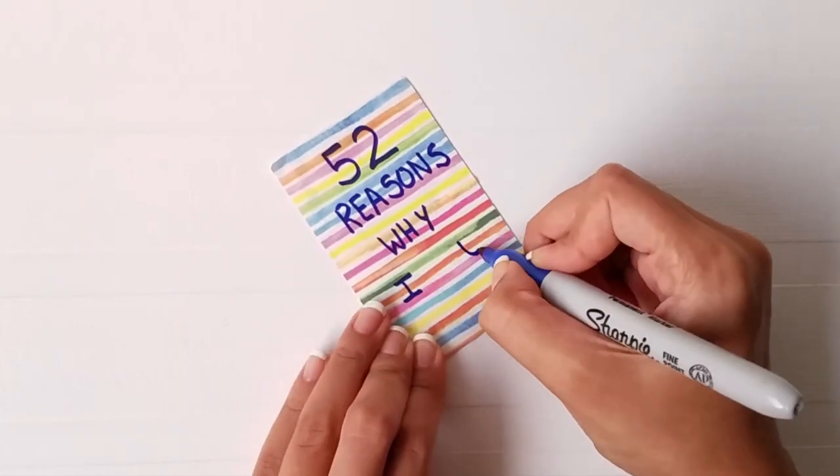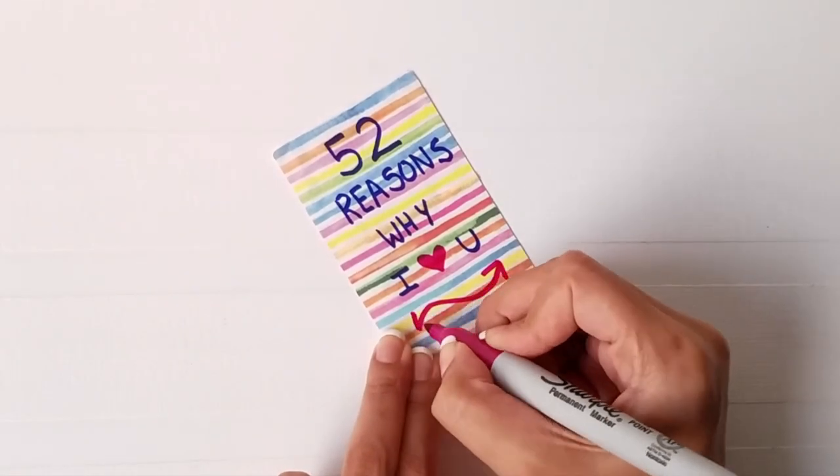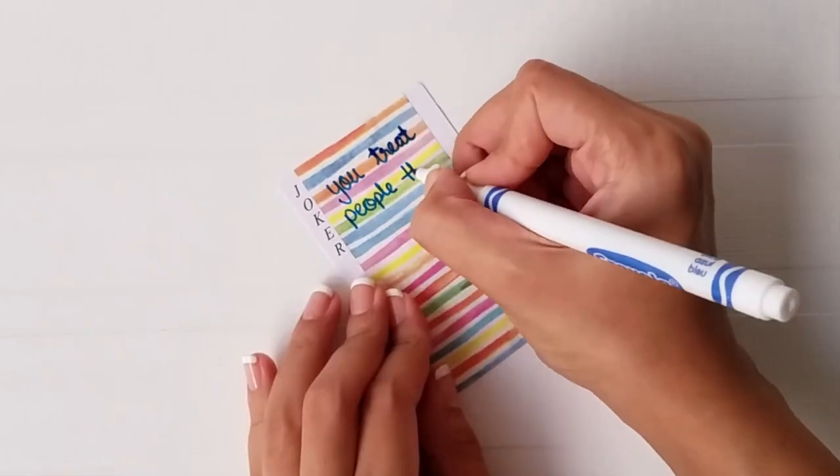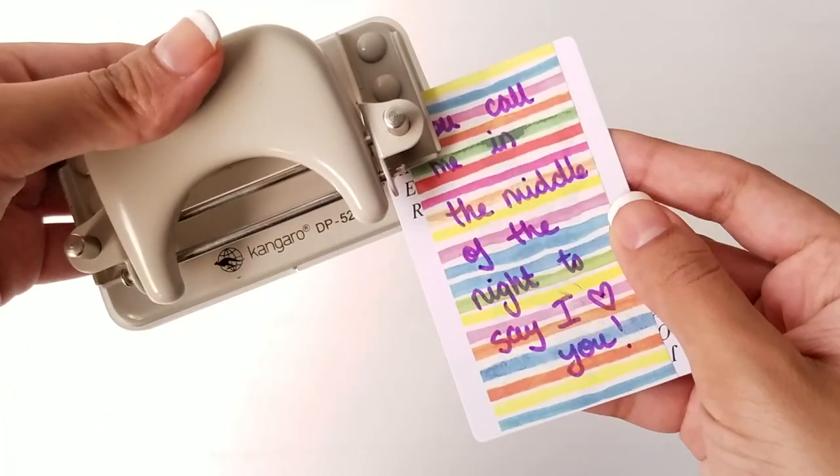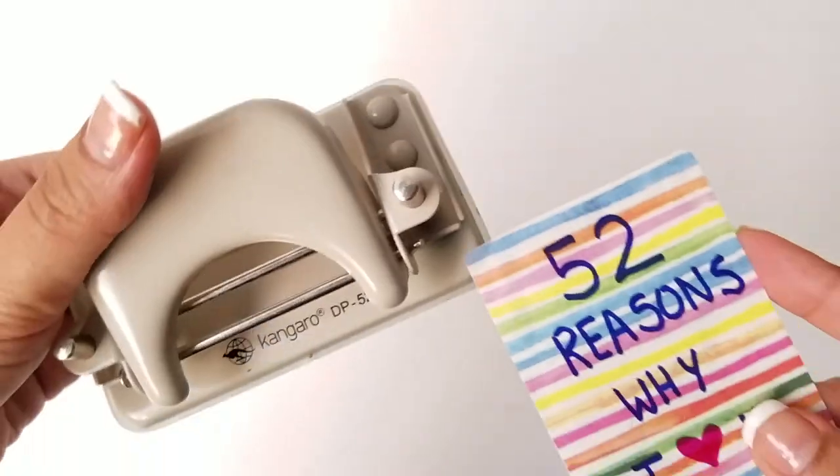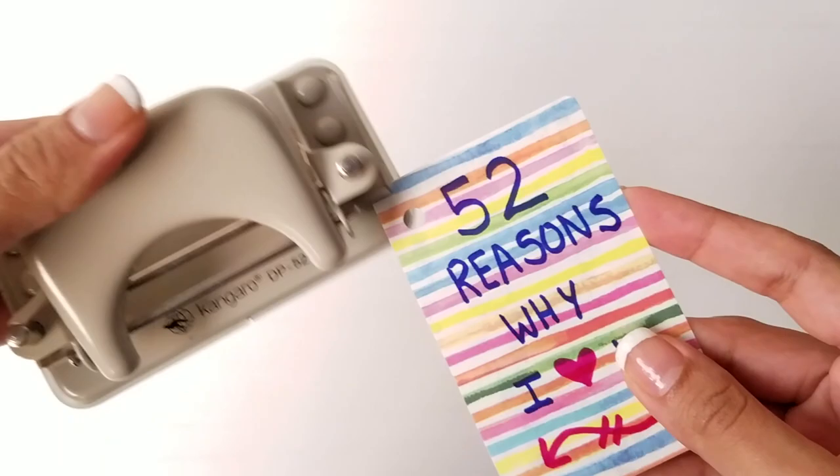Write the title on the cover card and 52 reasons why you love your significant other on the rest of the cards. Punch a hole on the top left corner and secure all the cards with a decorative ribbon.